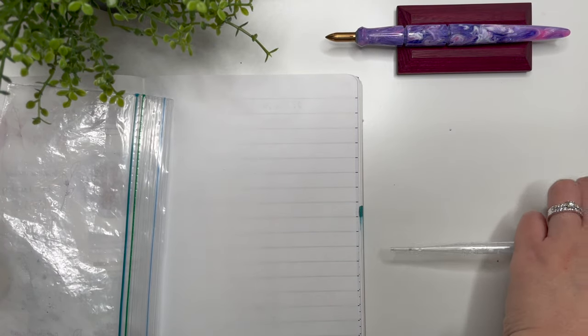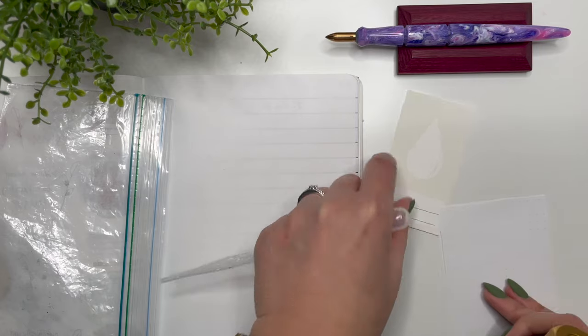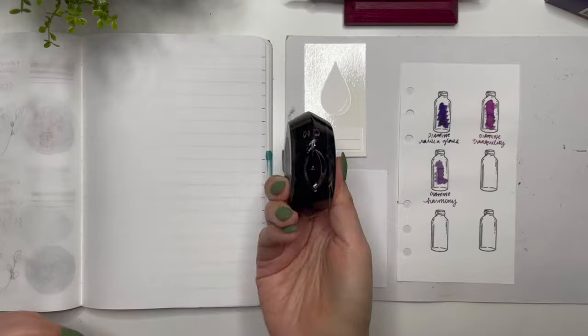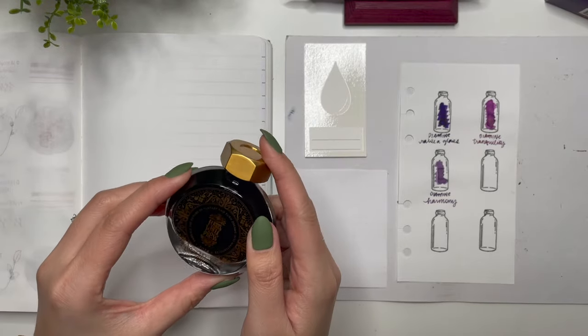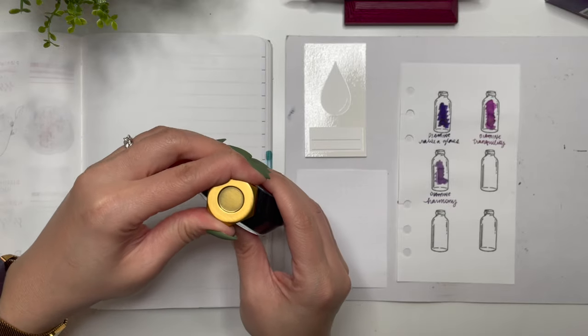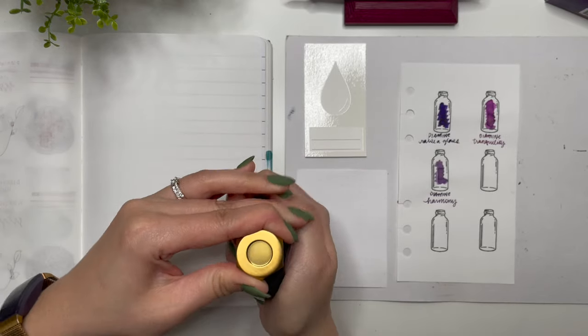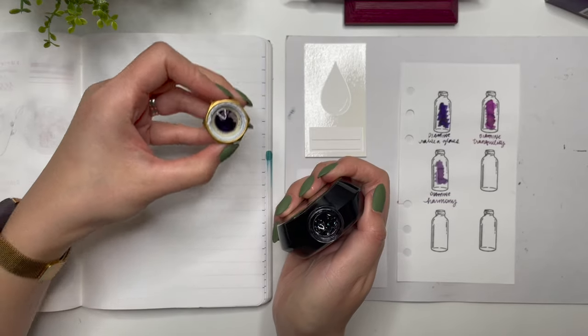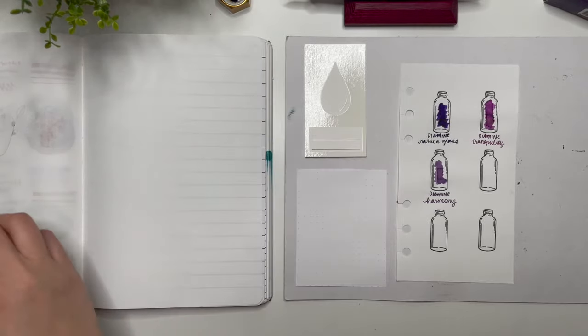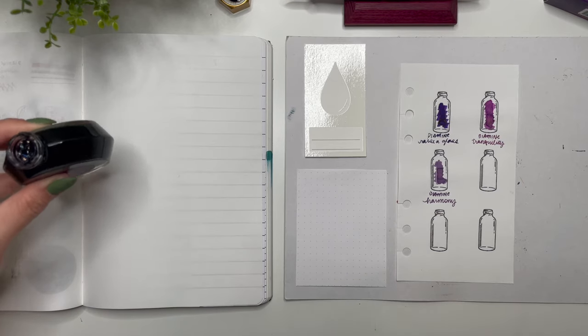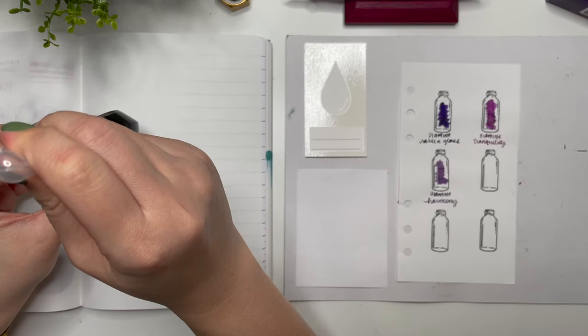Then swirl it around with the sandwich bag and then actually swatch it on my Wearingeul swatch card as well as the Rhodia paper here. All right, so go ahead and agitate that a little bit here and just marvel at the bottle. One of the things though that I have to fully admit about the Ferris Wheel Press bottles is, while they are beautiful, they are horrible for filling pens.